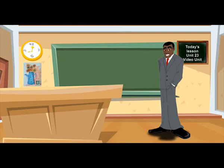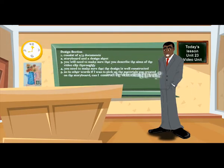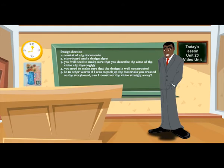The next section is the design section, which will consist of two or three documents — a storyboard and a design sheet. You will need to make sure that you describe the aims of the video clip thoroughly. You need to make sure that the design is well constructed — in other words, if I was to pick up the materials that you've created on the storyboard, can I construct the video straight away?